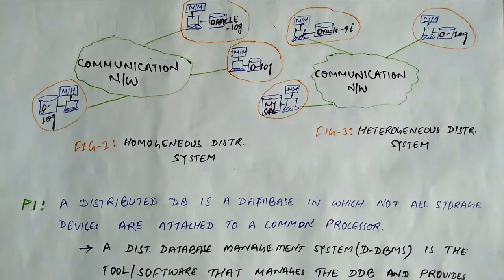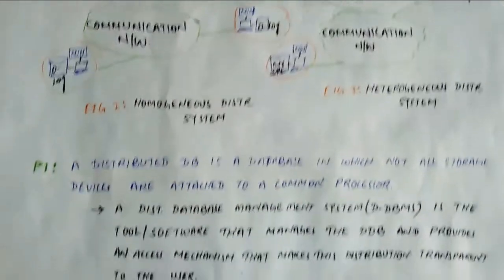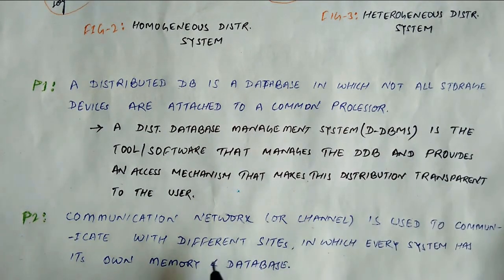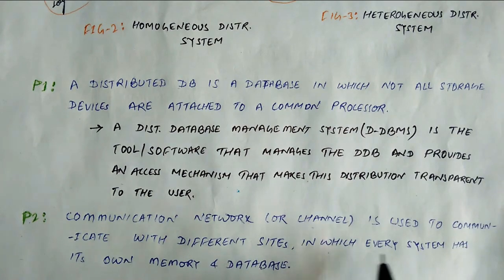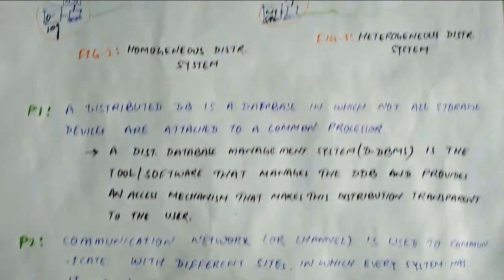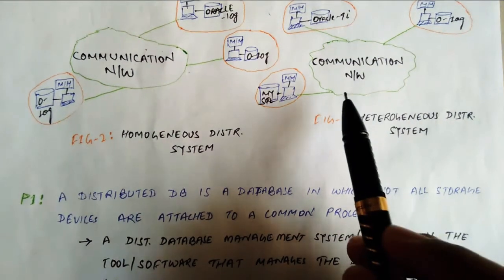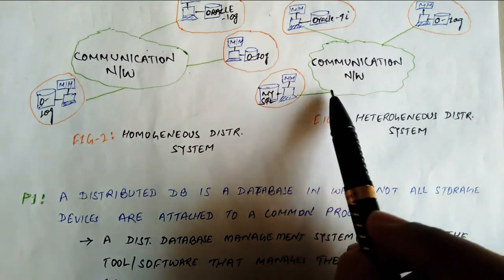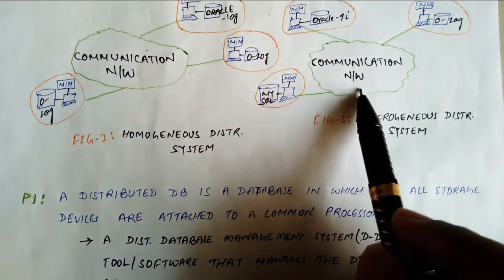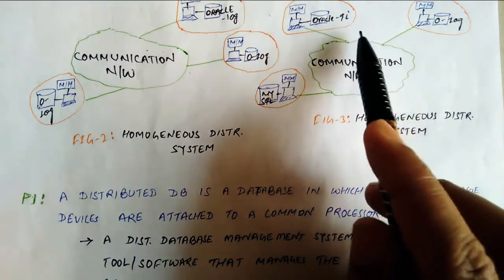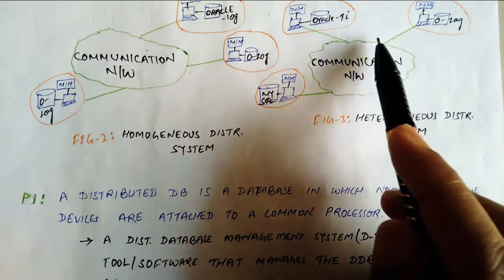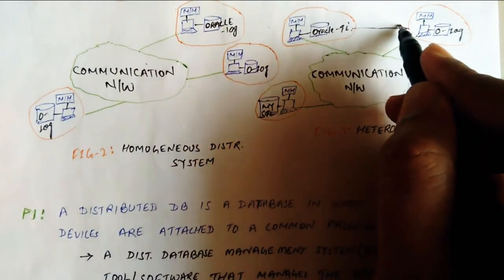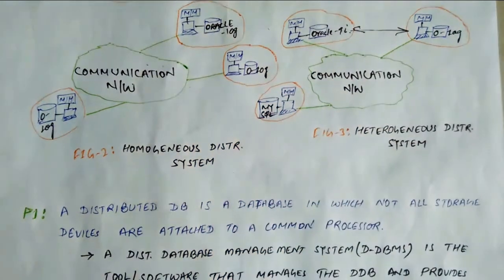The second point is the communication network, which we call the communication channel. It is used to communicate with different sites, in which every system has its own memory and database. In a distributed system, problems are given to each site through the same communication channel. If one computer communicates with another, it does so through message passing.